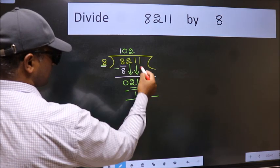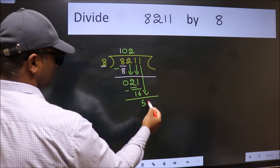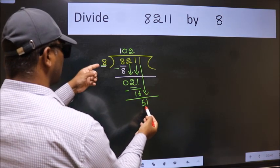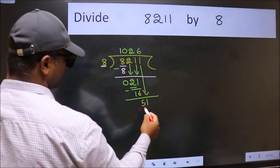After this, bring down the beside number. So, 1 down. 51. A number close to 51 in 8 table is 8, 6, 48.